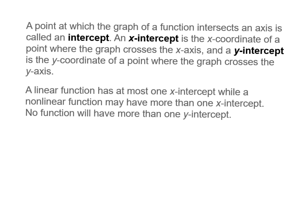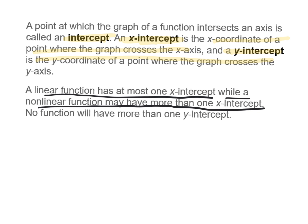Make sure to write down this vocabulary. A point at which the graph intersects an axis is called an intercept. Define x-intercept and y-intercept. Note that a linear function has at most one x-intercept, while a nonlinear function may have more than one x-intercept. No function will have more than one y-intercept — please make note of that.